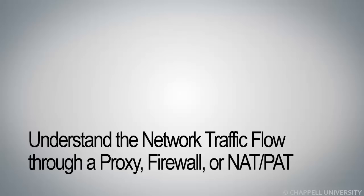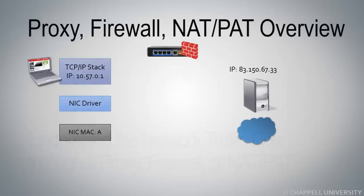Now we will take a look at how traffic flows through a proxy device, a firewall, or a network address translation or port address translation device. We'll begin with a very simple scenario where we have a client on the left-hand side, and the client's IP address is 10.57.0.1. This device in the center is a NAT box, so it will do network address translation.